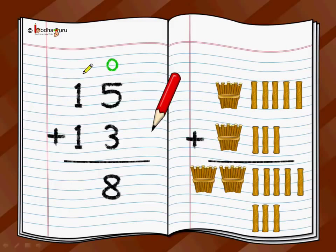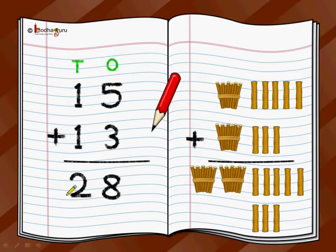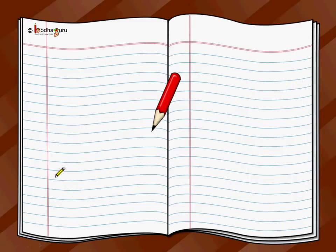We do the same on the left-hand side for the tens position: one plus one equals two. So the answer of 15 plus 13 is equal to 28, and that is what you can see pictorially too — two bundles of 10, which is 20, then 8 more sticks, making 28. So whether you do it pictorially or numerically, five plus three is 8 and one plus one is 2, giving 15 plus 13 equals 28.